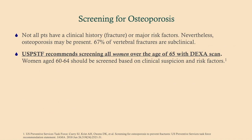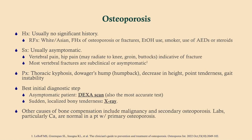In taking a history, these patients usually don't have a significant history; look for risk factors. These patients are usually asymptomatic until they experience a fracture, so look for signs associated with fracture: vertebral pain, point tenderness, or hip pain. These patients are at risk for easy fracture — not necessarily from serious injury.